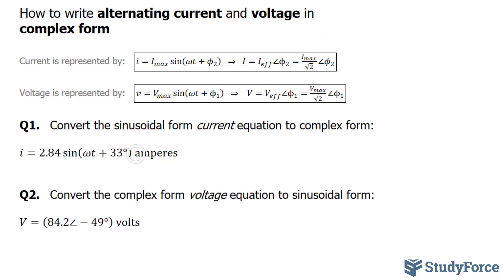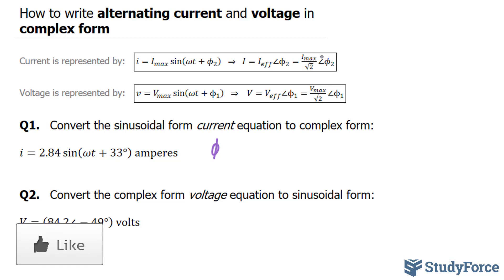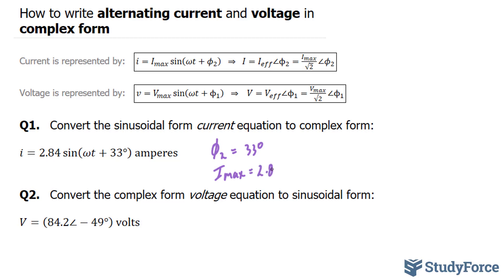What we have to do is convert this so that it looks like the complex form version of this equation. In our equation, our angle is 33 degrees, so that represents phi — our phase angle. Since it is written as phi subscript 2, I'll do the same where I have 33 degrees. In order to write it in complex format, you also need to state your maximum current represented as i max. The maximum current here is the amplitude of 2.84, so our i max is 2.84.